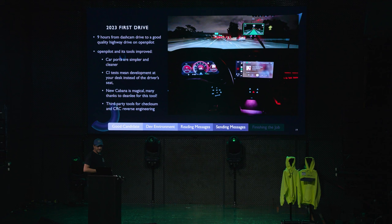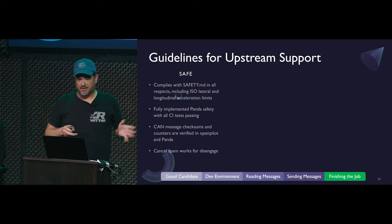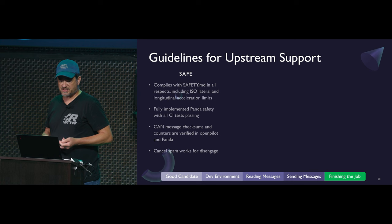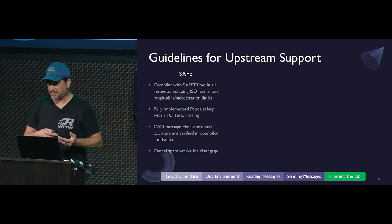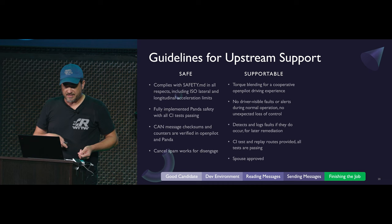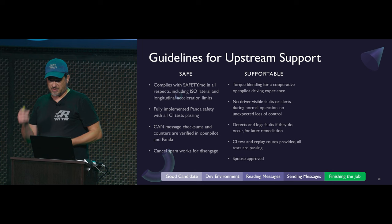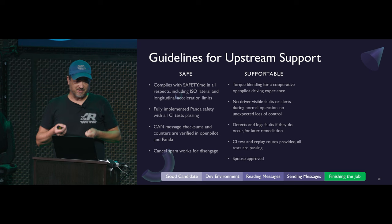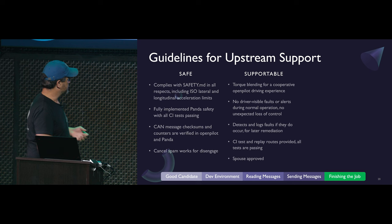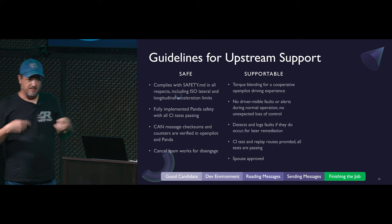To be clear, it's not upstream yet - this is probably the worst possible week to ask Adeeb and Shane to look at upstreaming a PR, but it's in progress. Guidelines for upstreaming: it needs to be safe and comply with all the guidelines the OpenPilot team laid out. It needs to be passing tests. You need to verify all checksums and counters, not only for sending but also for receiving. You need to make sure that if you're using stock ACC, OpenPilot can reject engagements if something's wrong. Then it needs to be supportable - work like other OpenPilot cars, which means torque blending. That's one of the reasons Tesla isn't listed as officially supported. There need to be no visible faults, it needs to drive in a way acceptable for a person, and if there are faults you need to log and upload them so they can be analyzed.